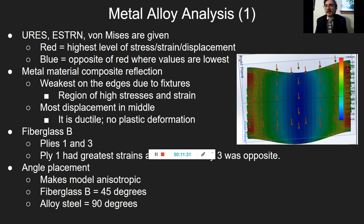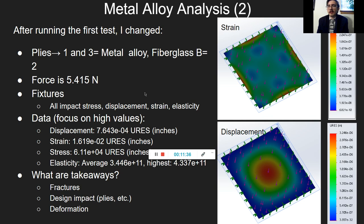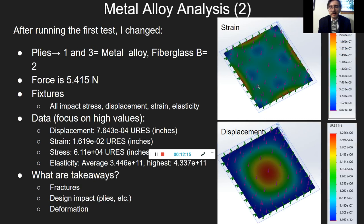After running that first test, I wanted to change the plies: I made metal alloy my first and third ply, and fiberglass became the second. I also changed the force, because it had been set to one Newton, which is not representative of a dropped steel ball. I ran the simulation again and fixed the fixtures so that all four sides now have them — you can see the little green arrows indicating they're held in place. Unlike the last test where only two sides had fixtures, they're now on all four, because those two unsupported sides could flex down and impact displacement and other variables.